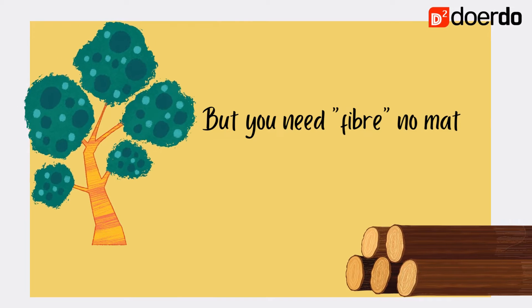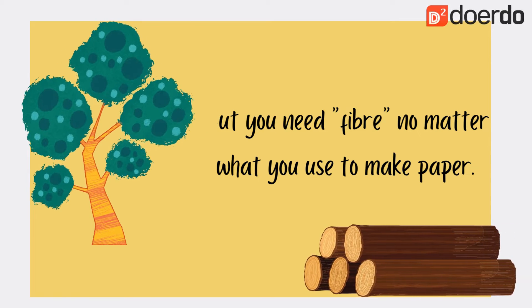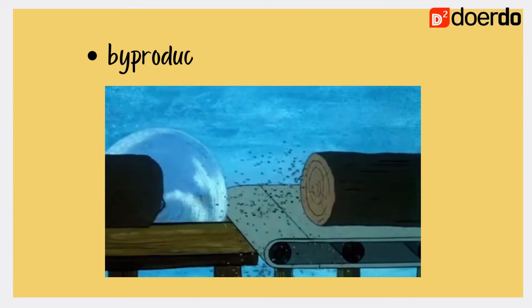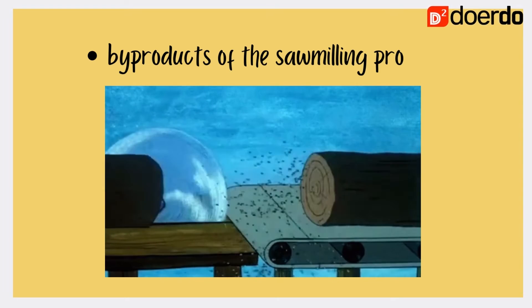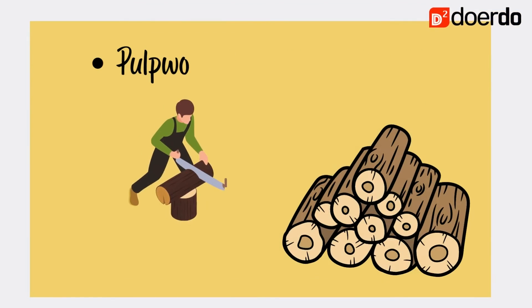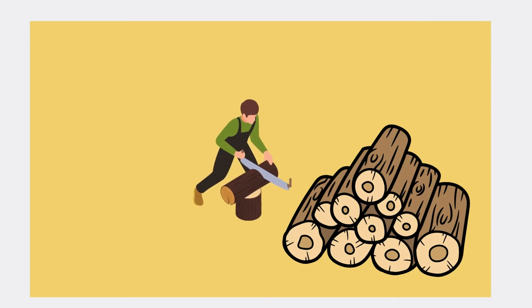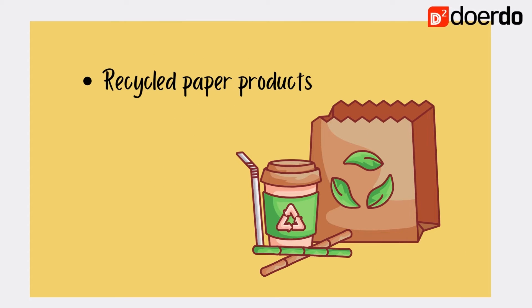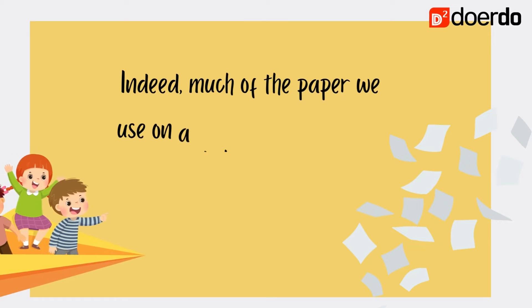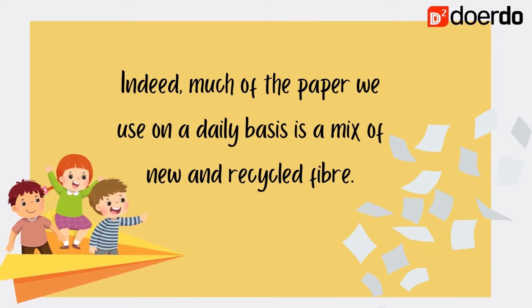But you need fiber no matter what you use to make paper. Paper fiber today is primarily derived from three sources: byproducts of the sawmilling process, pulpwood logs, and recycled paper products. Indeed, much of the paper we use on a daily basis is a mix of new and recycled fiber.